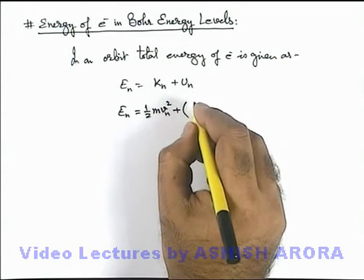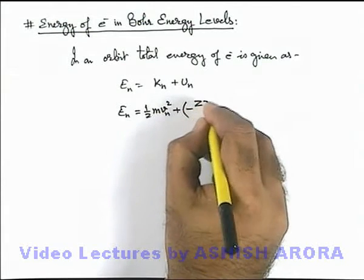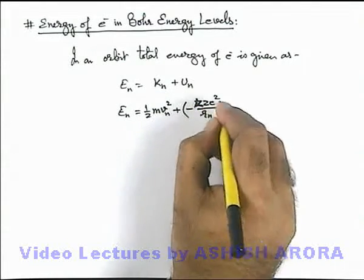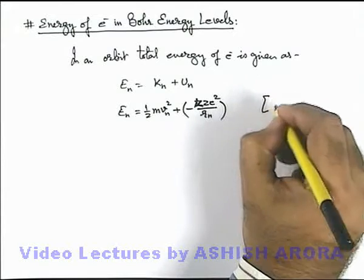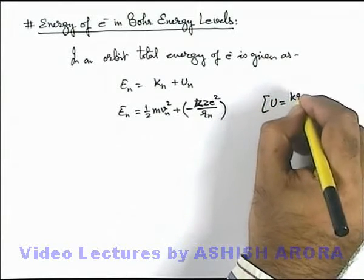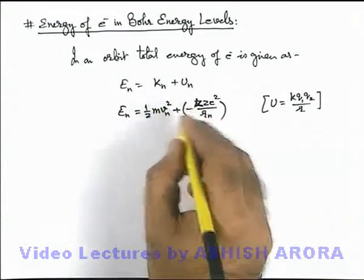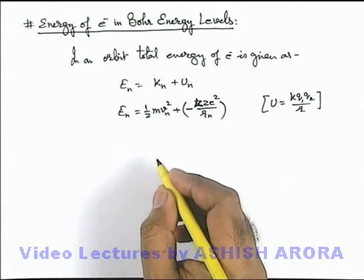So this energy can be given as minus k z e square by r_n, because potential energy we know for 2 charge system is written as k q1 q2 by r. Here because of attractive forces it will be negative.